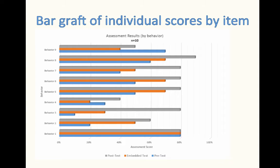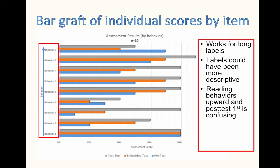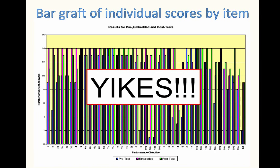Here's a different bar graph with individual scores by item going from left to right — it works nicely for long labels. But in this case, the labels could have been a lot more descriptive with specifically what each of those behaviors are. The problem is that they've got you reading the behaviors upward, and it's very confusing to figure out what the post-test is and what the pre-test is, as well as what order it goes in. Take a look at numbers 1, 4, and 9 — these have problems that you need to solve.